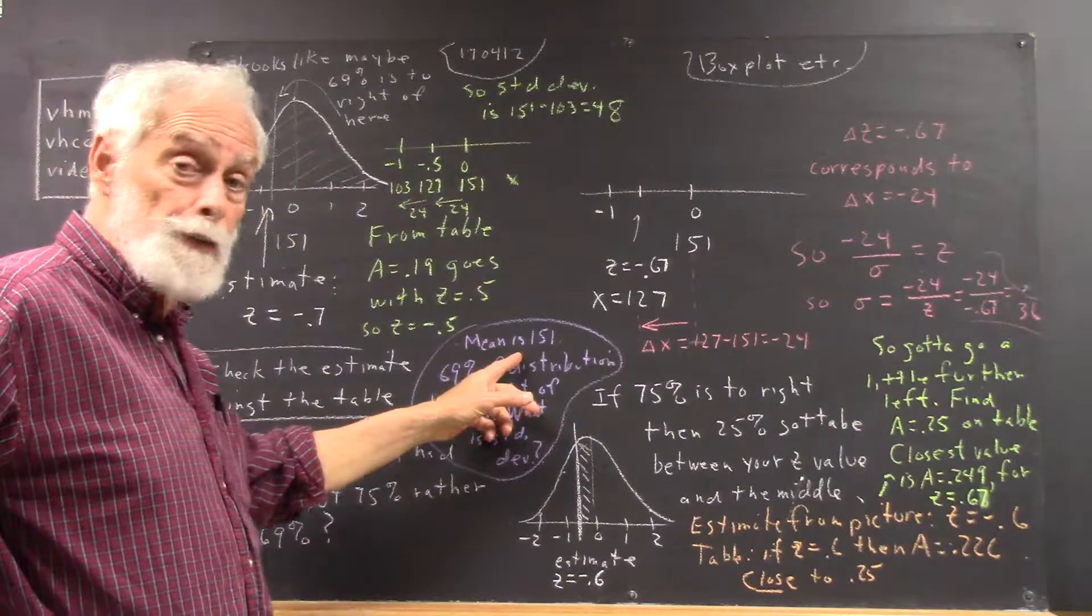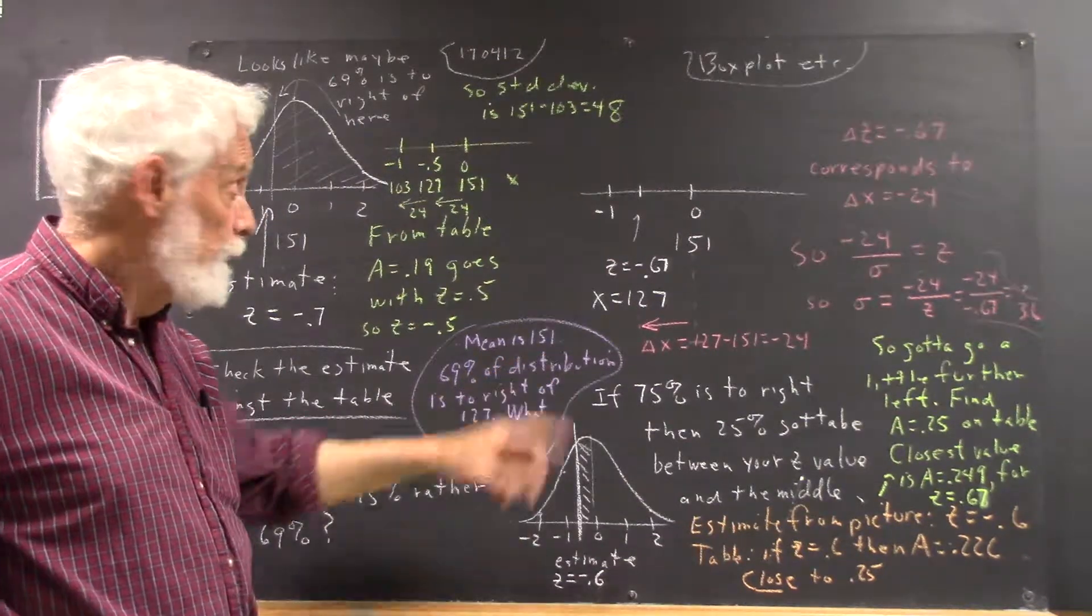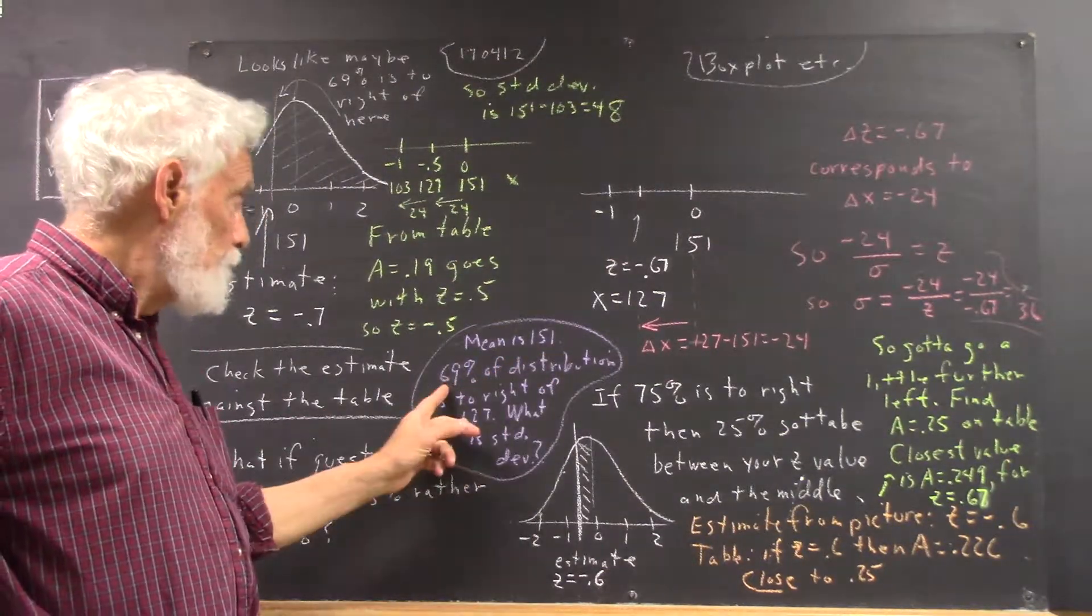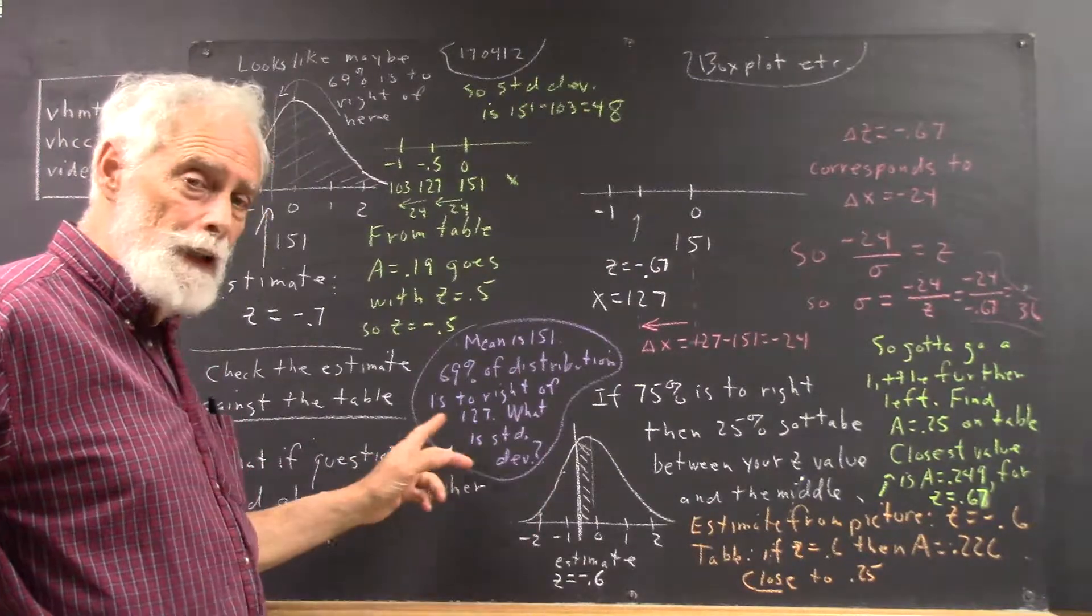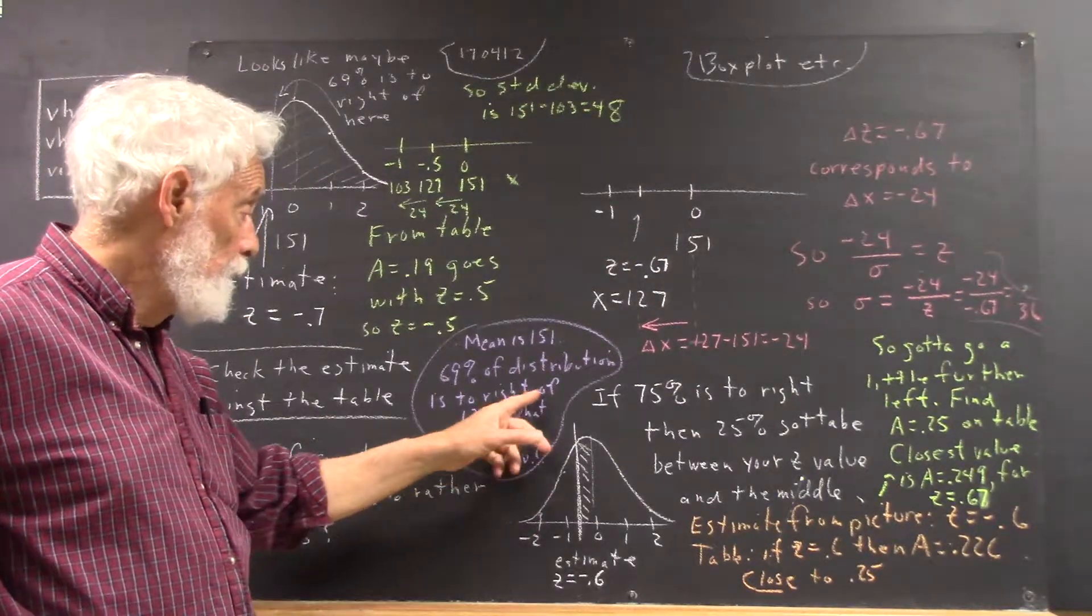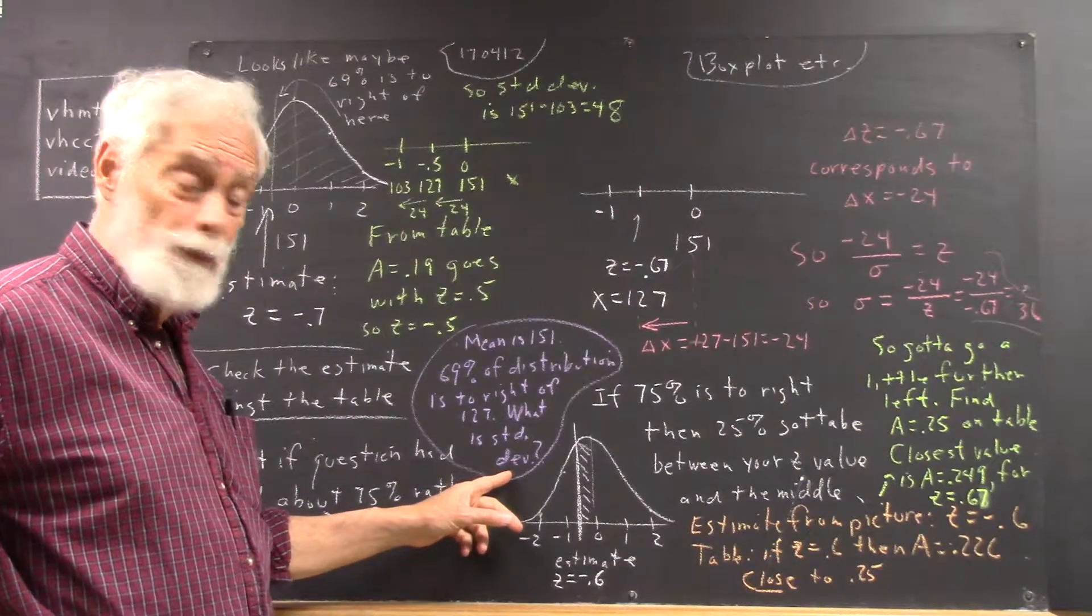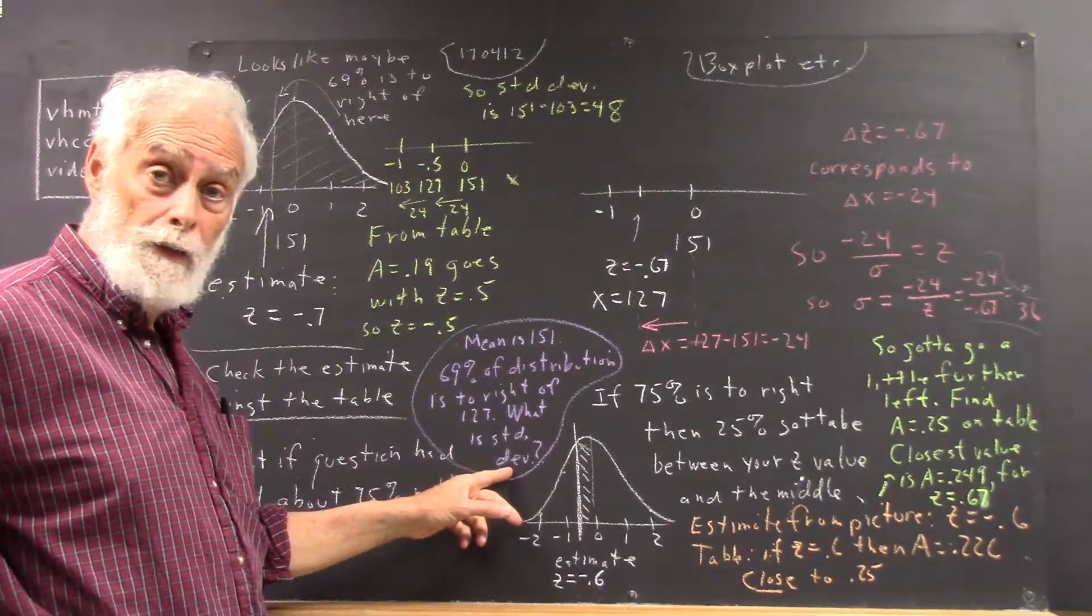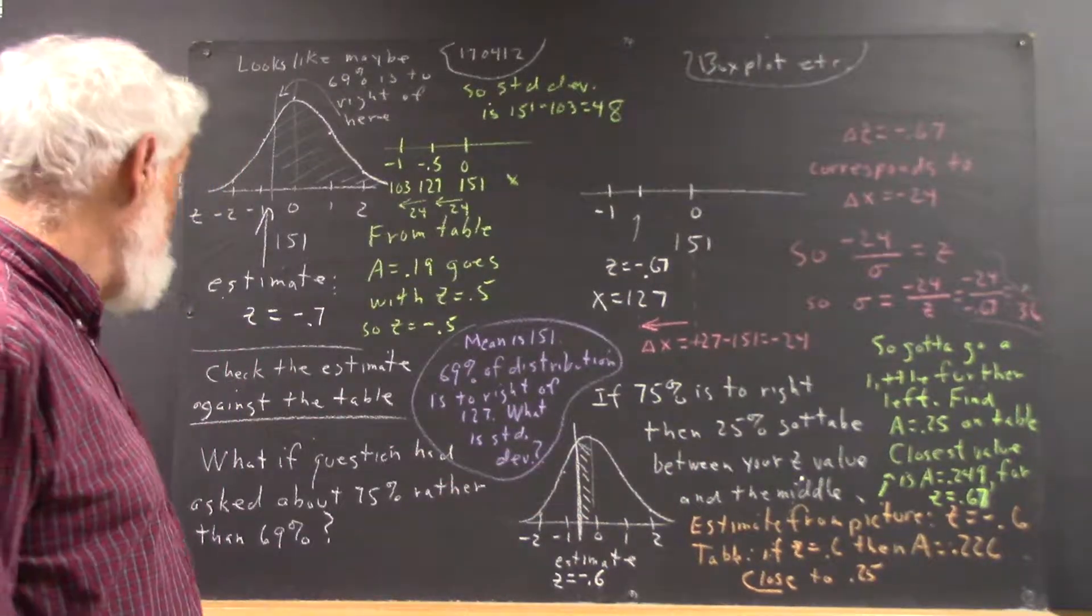The mean of a normal distribution is 151, and 69% of the distribution lies to the right of 127. The question then is what's the standard deviation? Because, of course, once we figure out the standard deviation, we can answer just about anything.